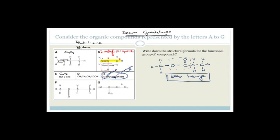Moving on. Now they say write down the structural formula for the functional group of compound C. Compound C is a butene, which means it's an alkene. The functional group of an alkene is a double bond. So you write C double-bonded C — that is your functional group and its structural formula.